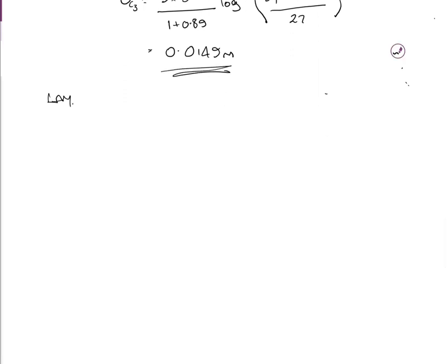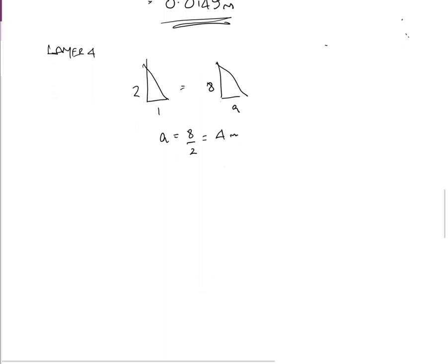For layer 4, the depth to center is 8 meters. Using the 2-to-1 triangle: a = 8/2 = 4 meters. The stress square has increased 4 meters on each side, so x4 = 3 + 4×2 = 11 meters.